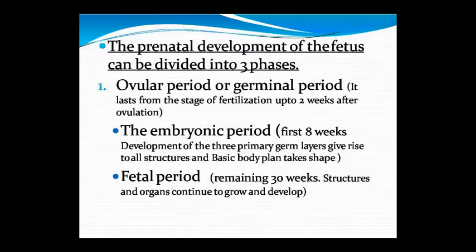During the embryonic period, three primary germ layers are formed: ectoderm, mesoderm, and endoderm. These will give rise to all basic body structures. The fetal period is when these structures, already laid down from the three primary germ layers, continue to grow, develop, and mature.